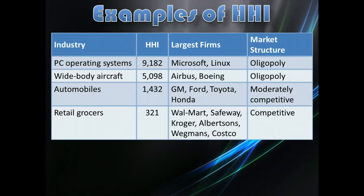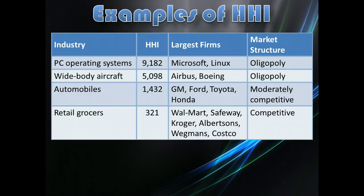In the world of PC operating systems, there are basically two firms, giving it a very high HHI score — clearly an oligopoly. Wide-body aircraft are also produced by only two major firms — clearly an oligopoly. Automobiles are becoming somewhat more competitive with several firms in the market. Retail grocers have far more firms, with a very low HHI score. It's no surprise that grocery prices are pretty much the same across the board, because it's a very competitive market.